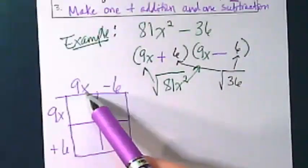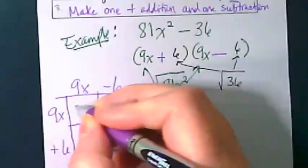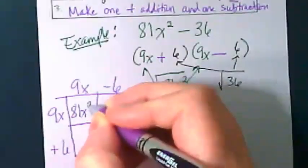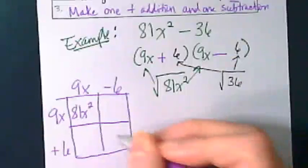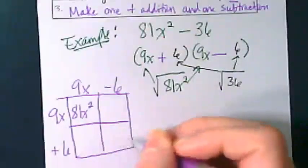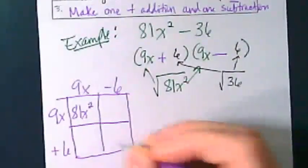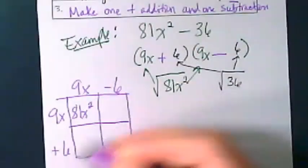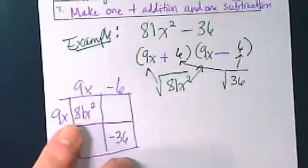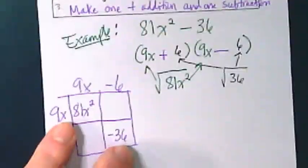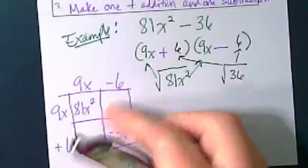9x times 9x is 81x². In the bottom right box, negative 6 times positive 6 gives us negative 36. These should look familiar from the original.